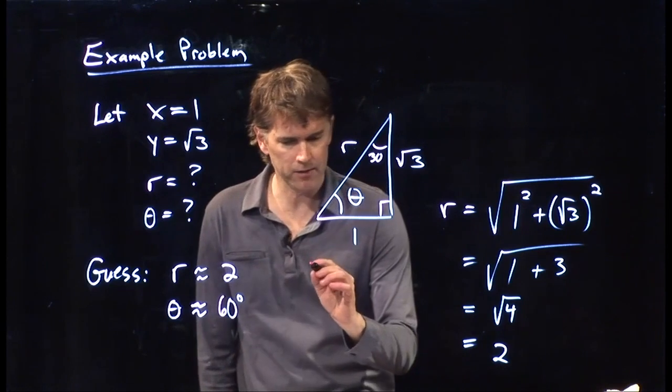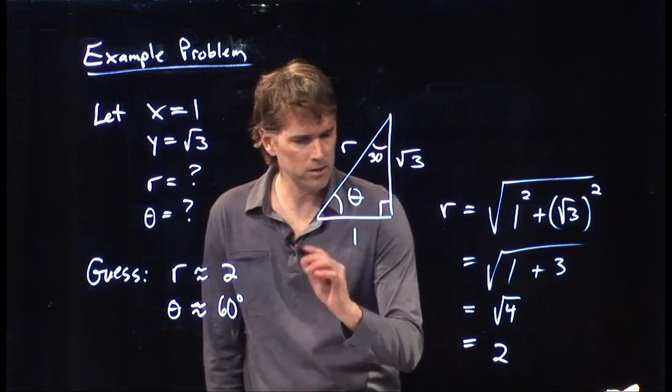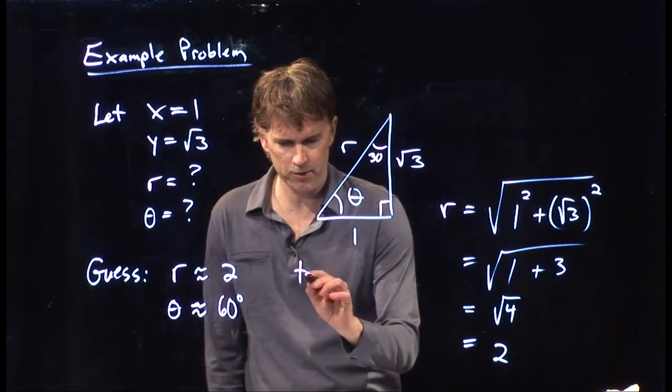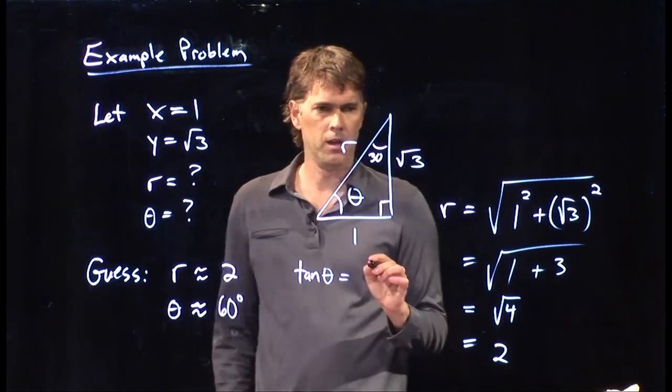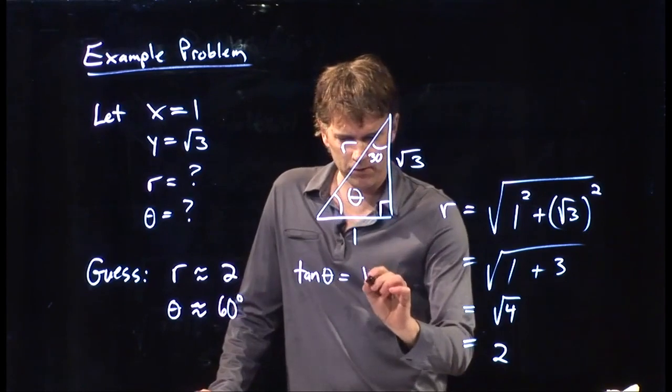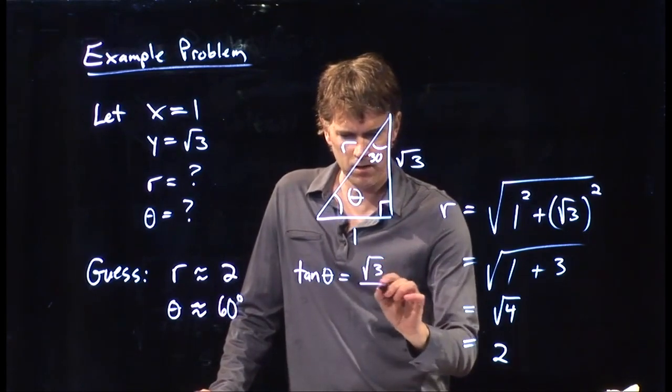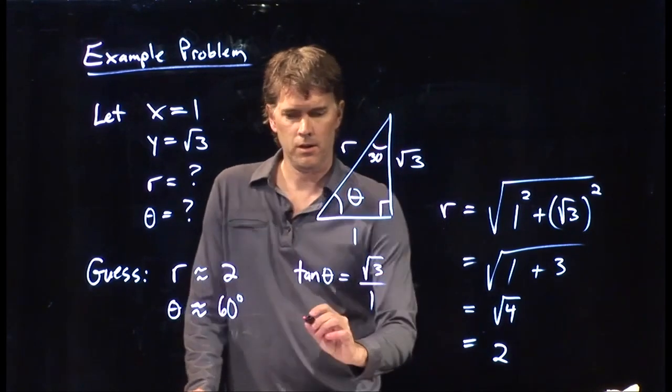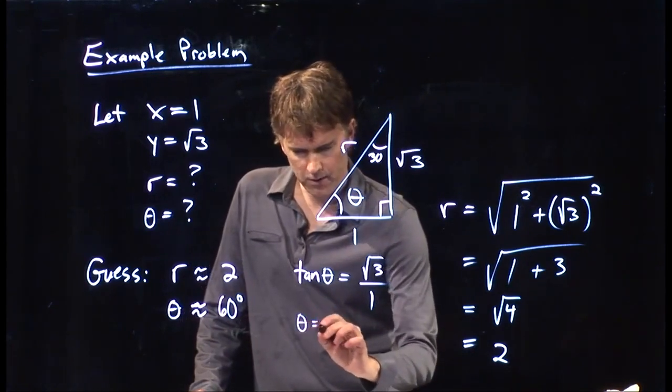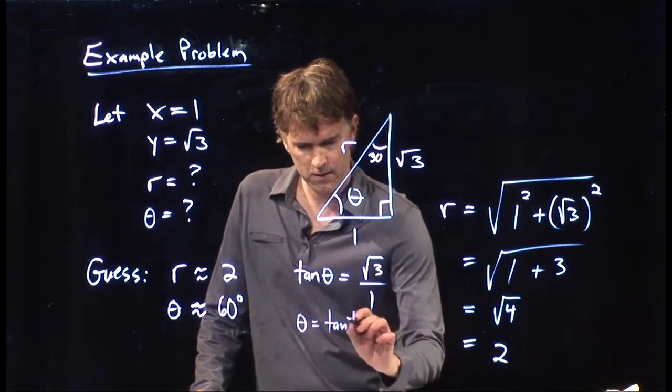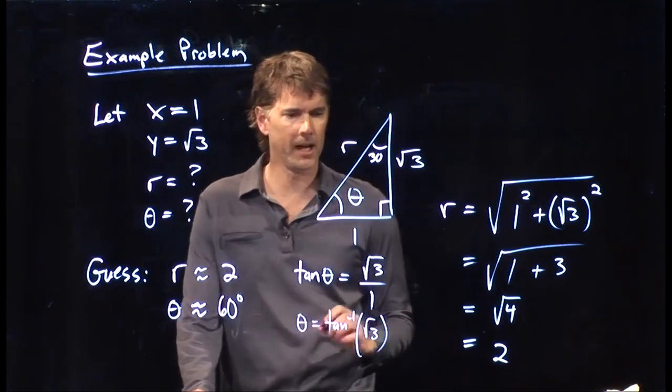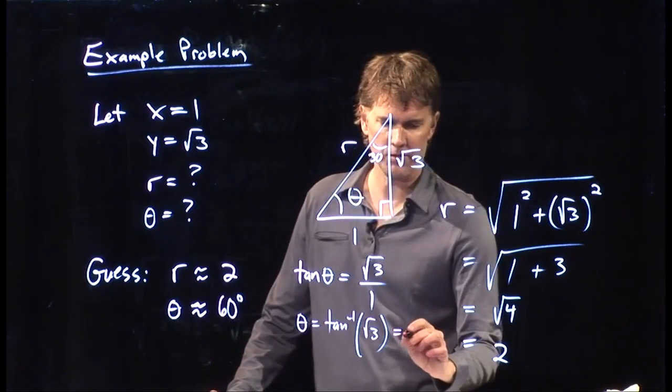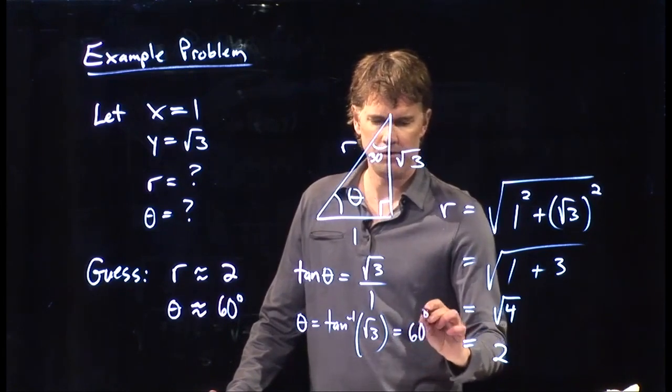And let's just convince ourselves that that is correct. And you can do any one of the trig functions but just for kicks, let's do the tangent. The tangent of theta is the square root of 3 over 1. So theta is the arctangent of square root of 3. And if you plug that into your calculator, you of course get 60 degrees.